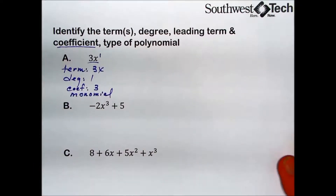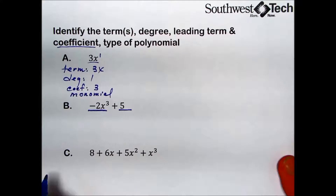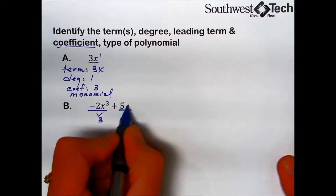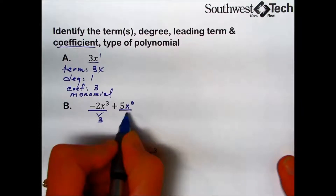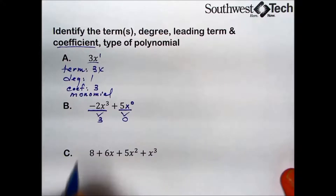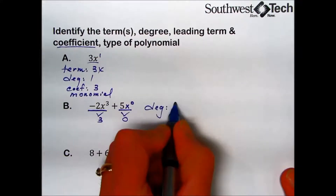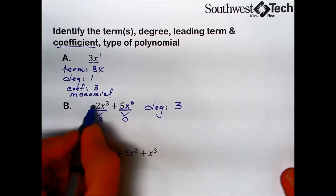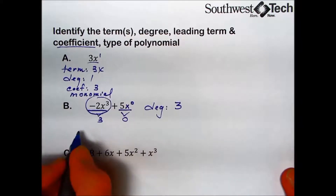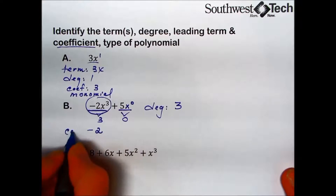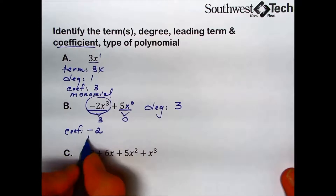In this next example, they're asking us to identify the terms — here's one term and there's another. The degree is the number of variable factors in that term. The variable is to the third power, so this has a degree of 3. There are no variables in the constant term, so a constant term has no degree. The degree of the polynomial is the highest degree, which is 3. The leading term is negative 2x to the third power, its coefficient is negative 2, and since it's a two-term polynomial, we would call it a binomial.